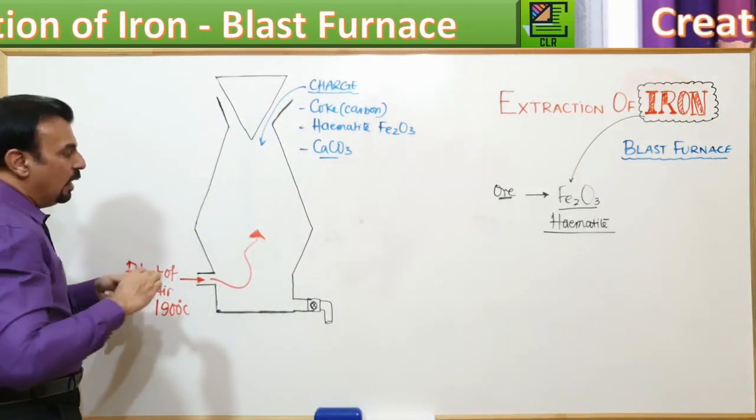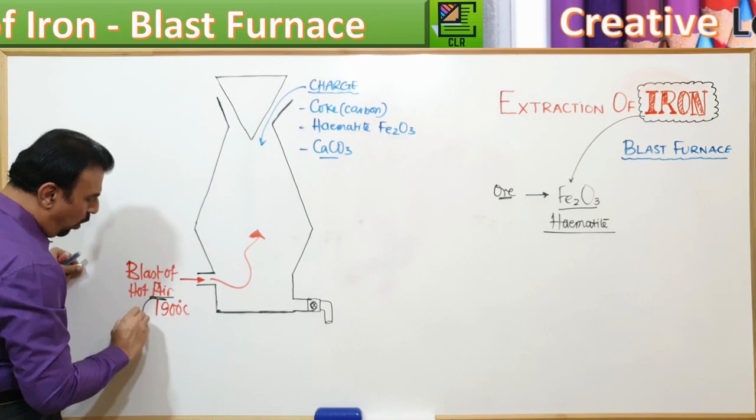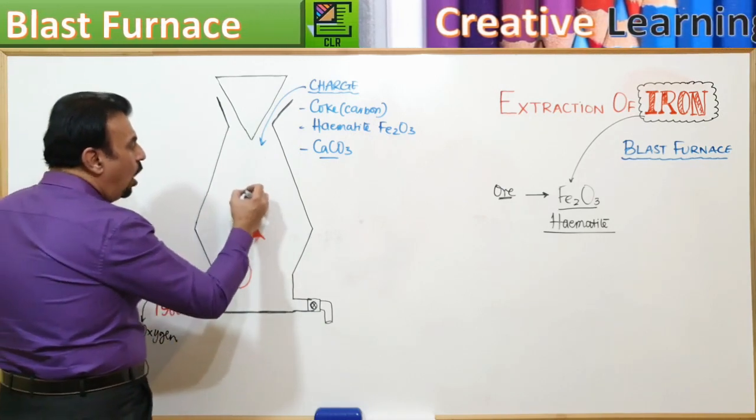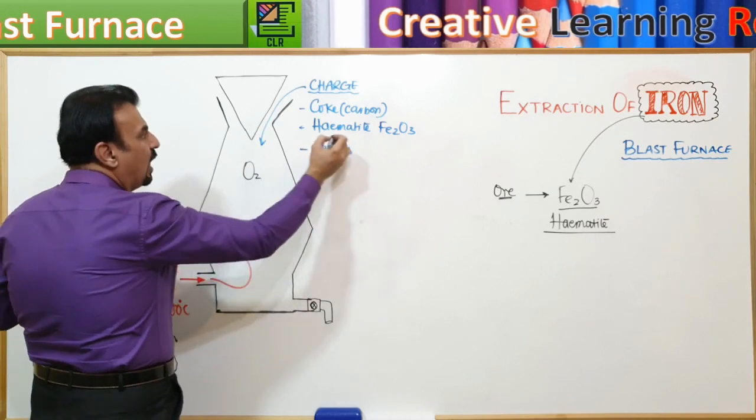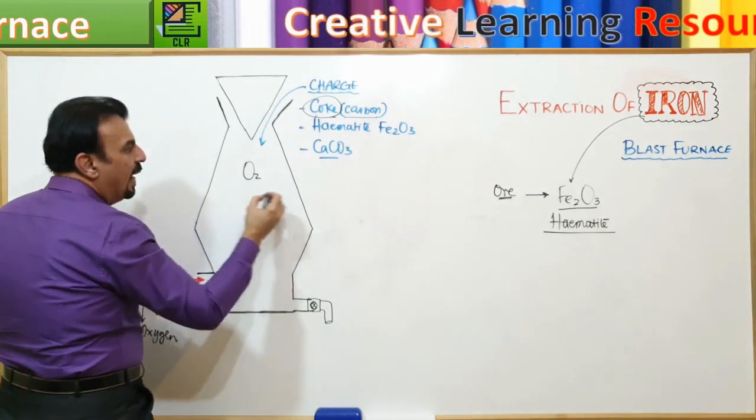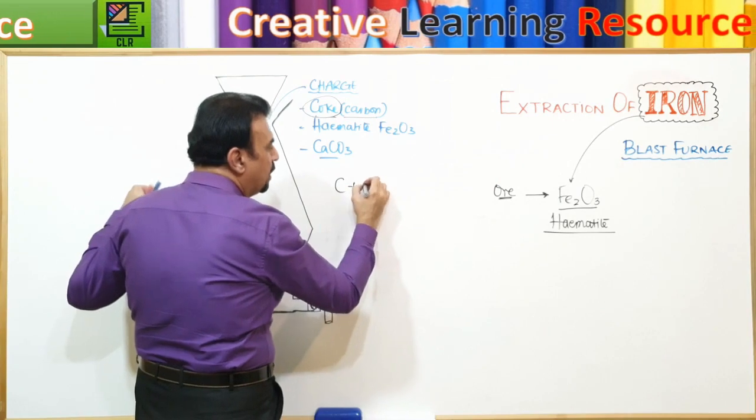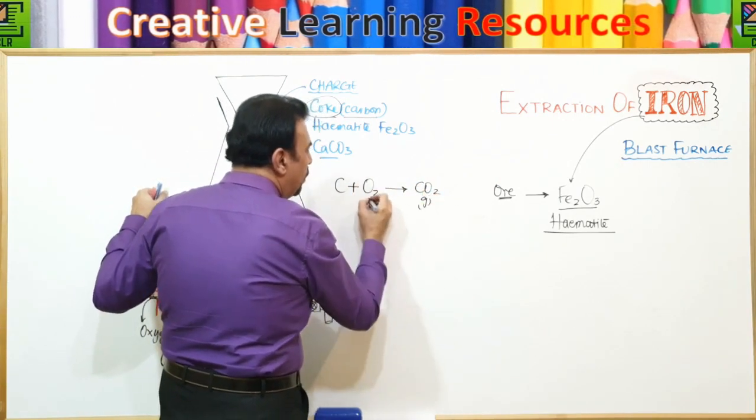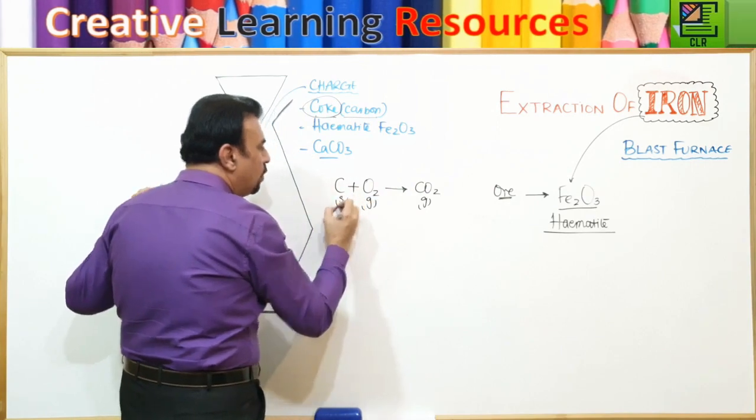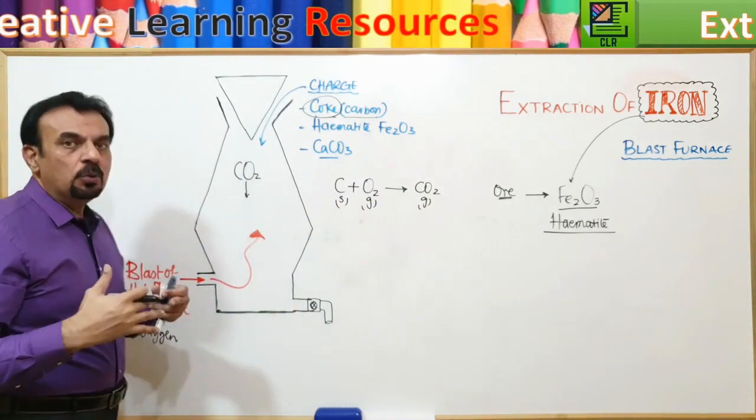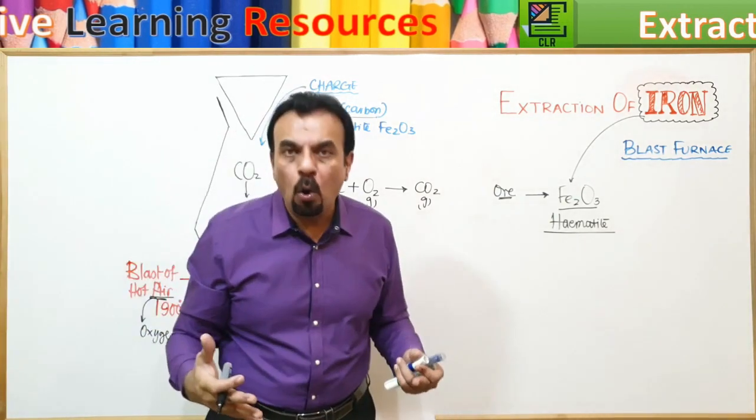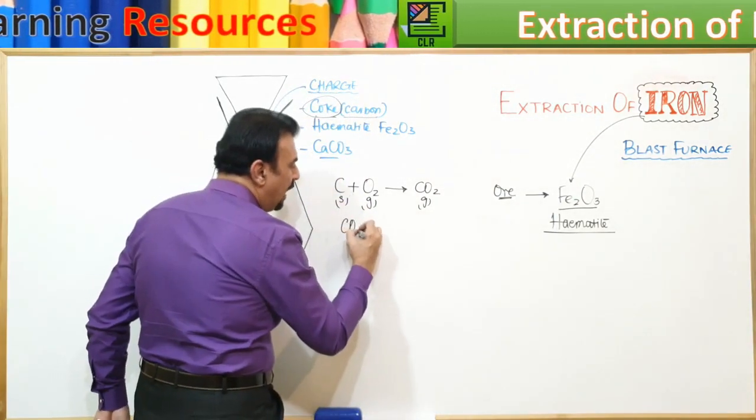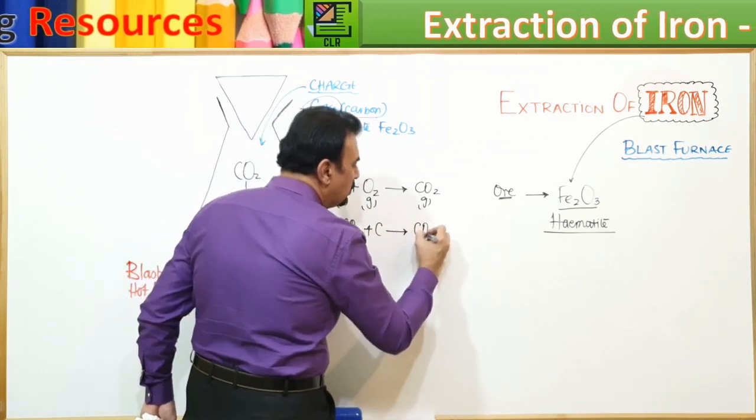Air means what? What is air giving? Air means oxygen. This oxygen is going to combine with the carbon. And what is the chemical reaction? Carbon is combining with oxygen and we are getting carbon dioxide. This carbon dioxide is going to react with more coke, with more carbon. So the carbon dioxide reacting with more carbon gives carbon monoxide.